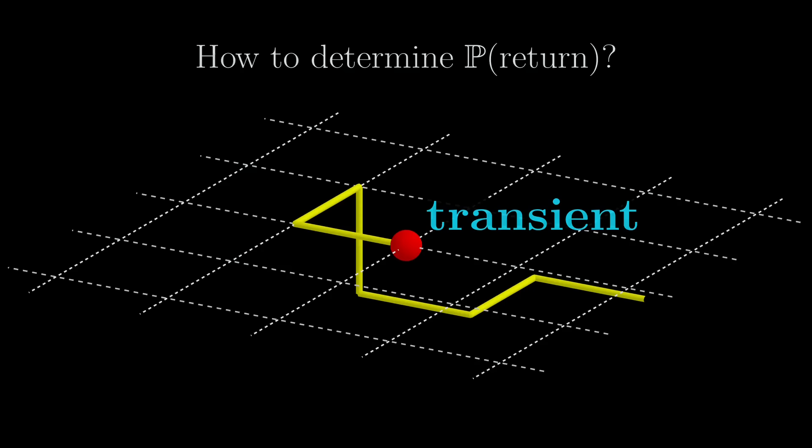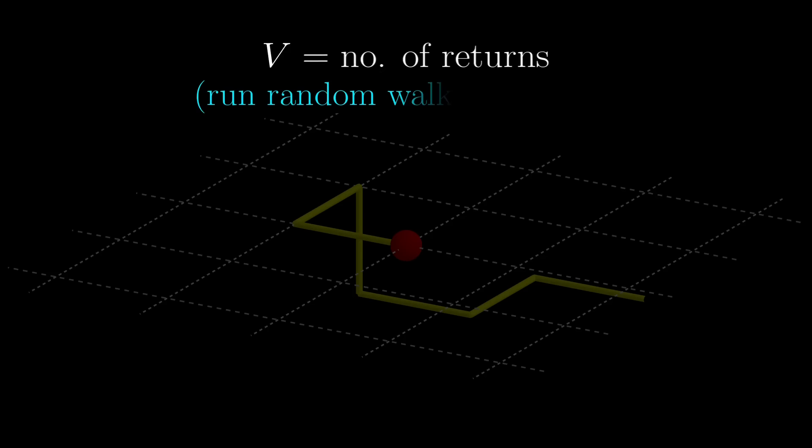Here's the trick. We consider a quantity V, which is the number of returns to the origin. The implicit assumption is to run the random walk to infinity, even if you have returned. Our focus is the expectation of V, i.e., the expected number of returns.